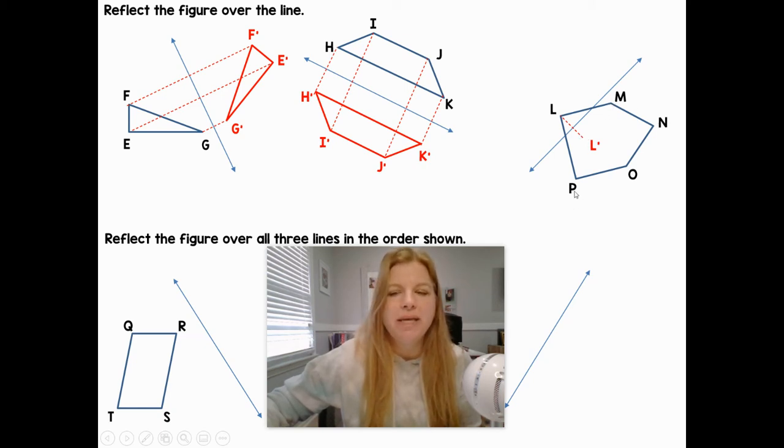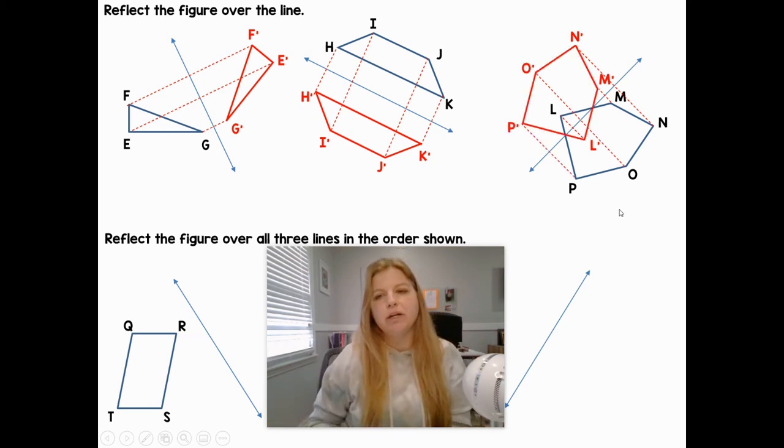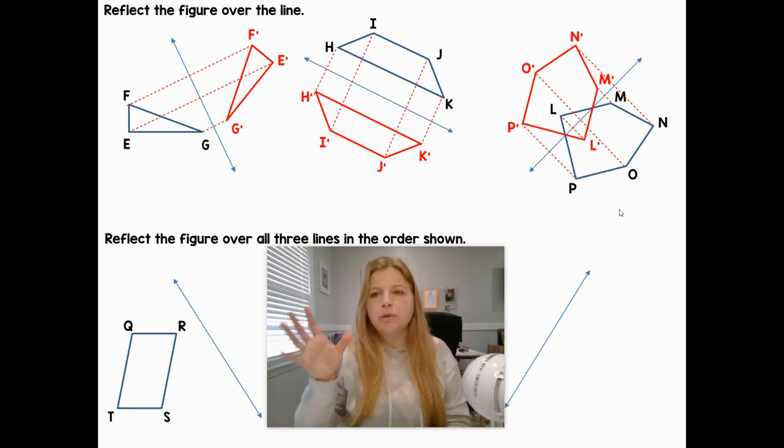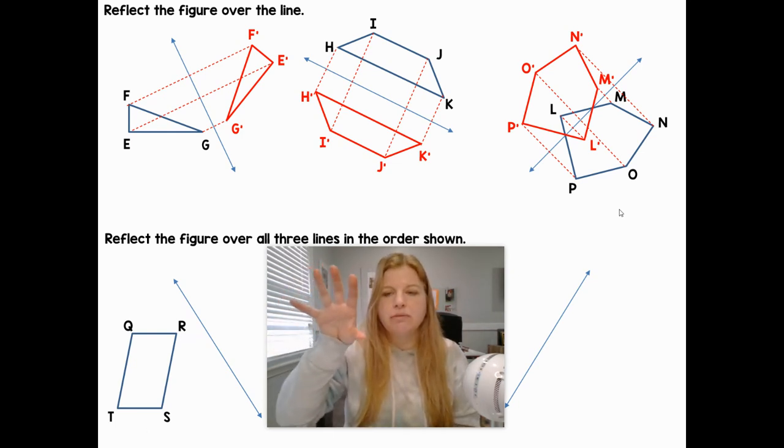But now when I go to reflect M, N, O, P, notice those are all going to go on the other side of the reflection line. So M prime, N prime, O prime, and P prime. When I connect them and make that figure, notice the blue figure is now reflected over the line to get the red, but there is a cool little overlap section.